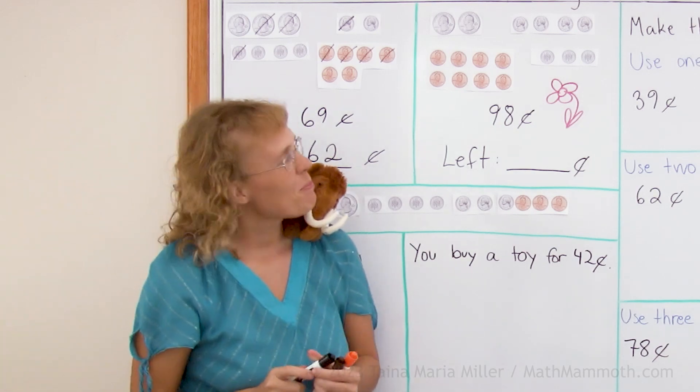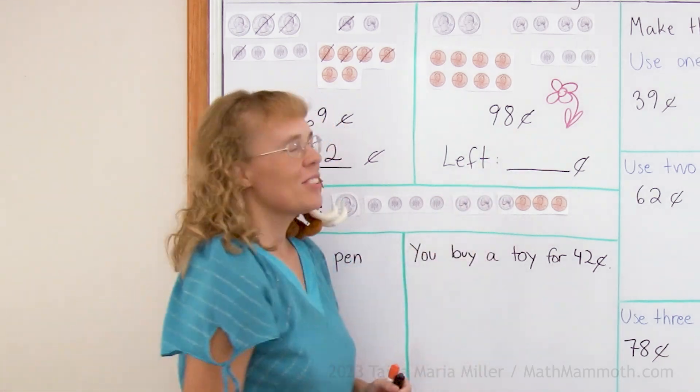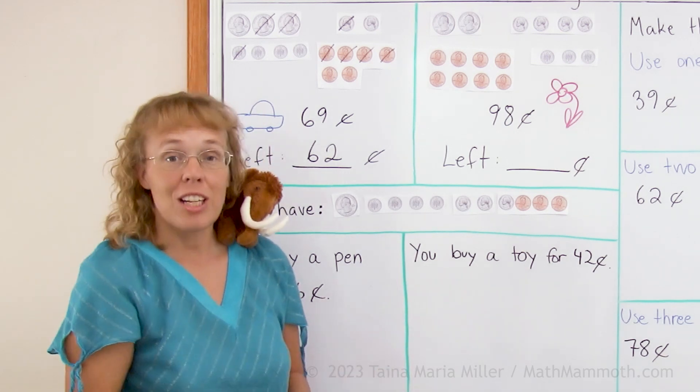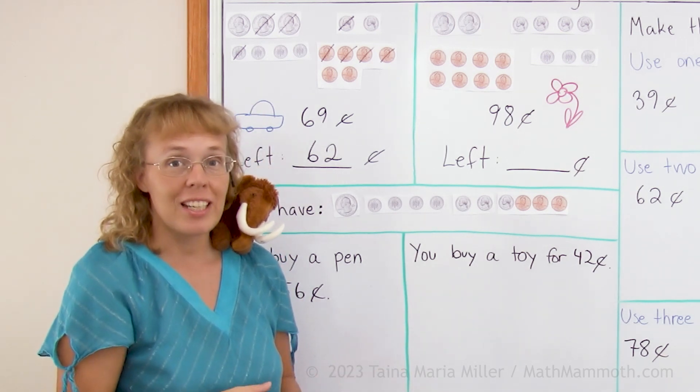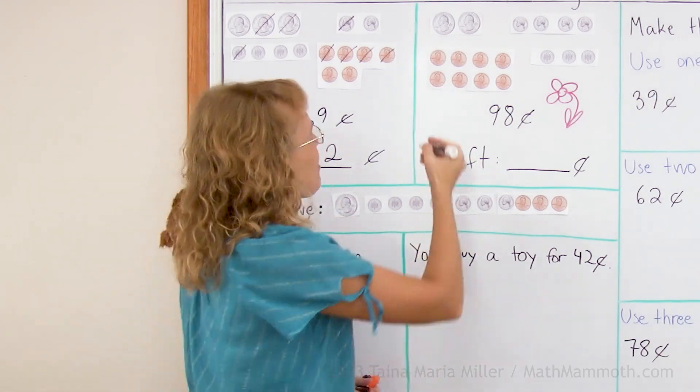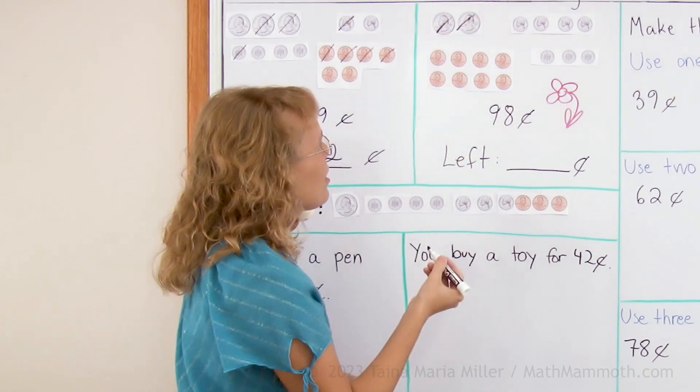Again, here you buy a flower for 98 cents. So let's first cross out the coins you will need to use for that 98 cents. Here we have two quarters, that is 50 cents.